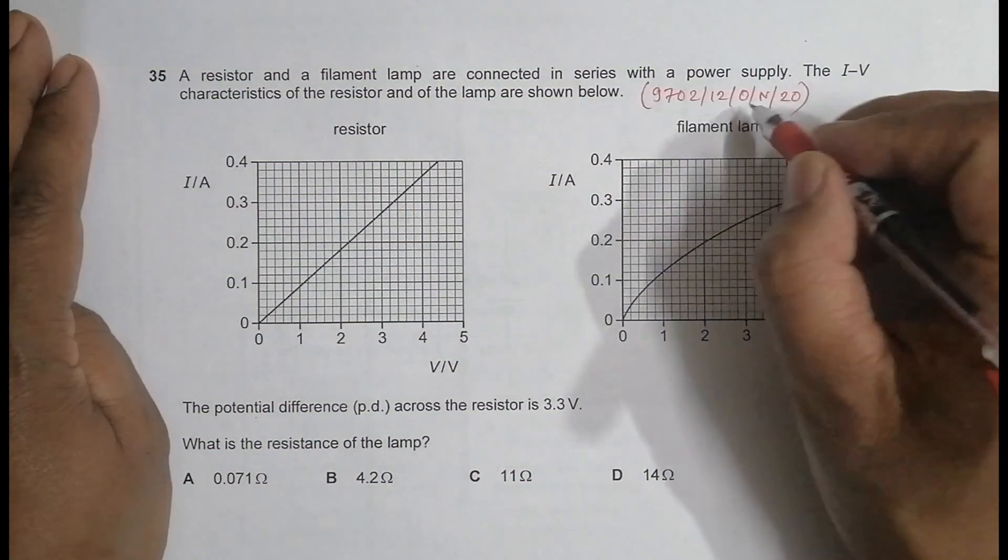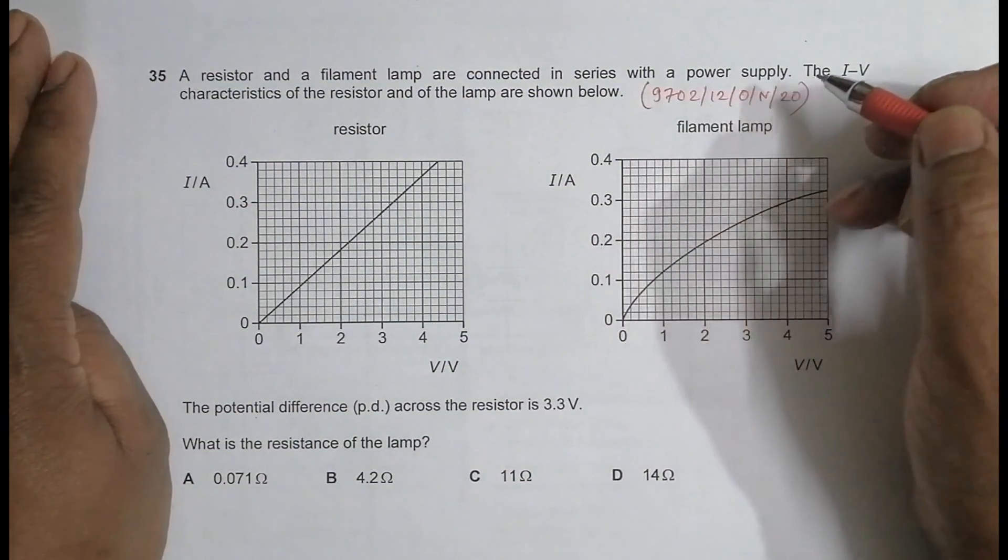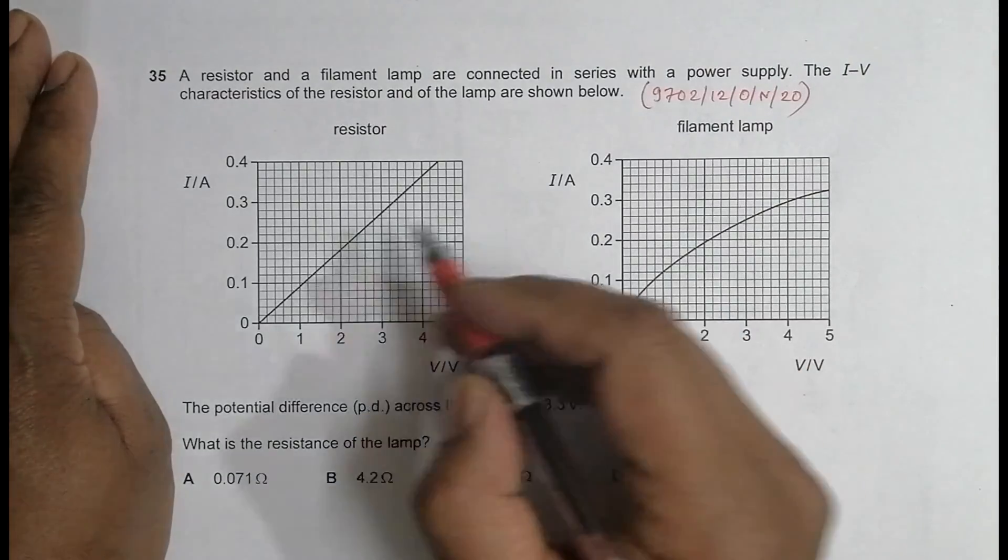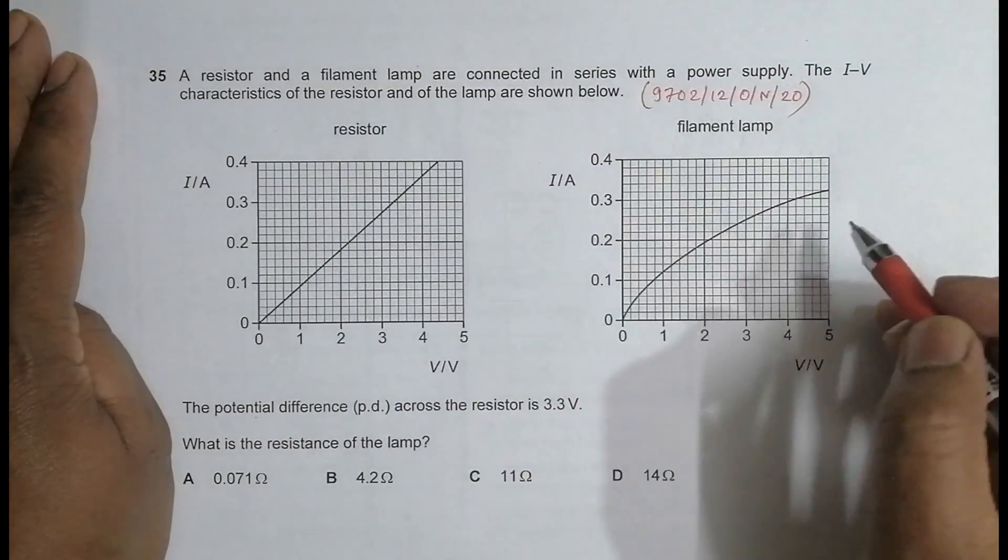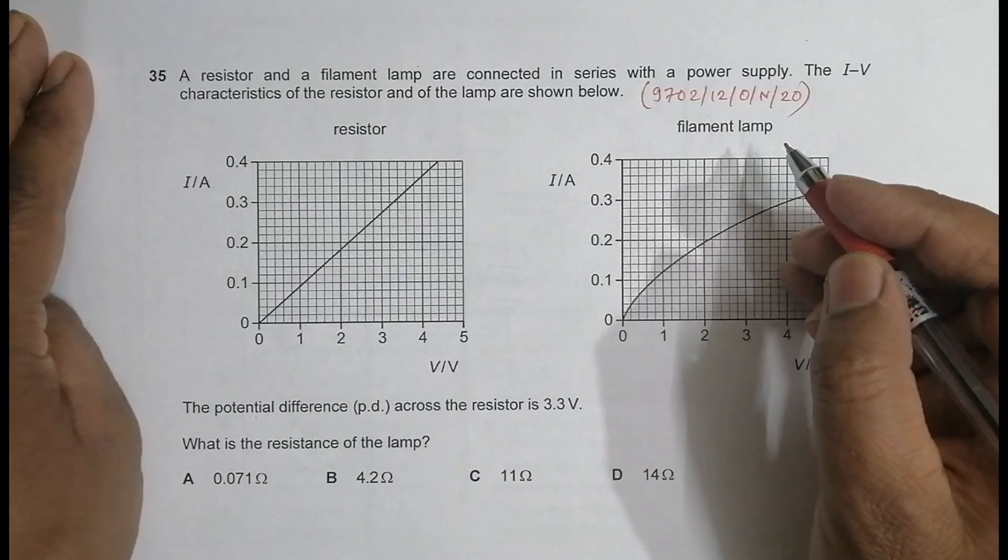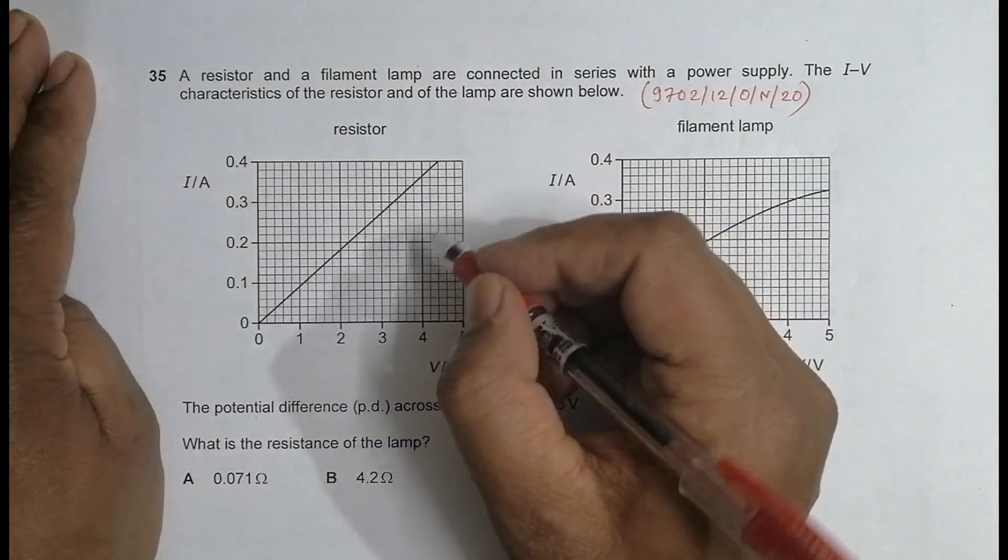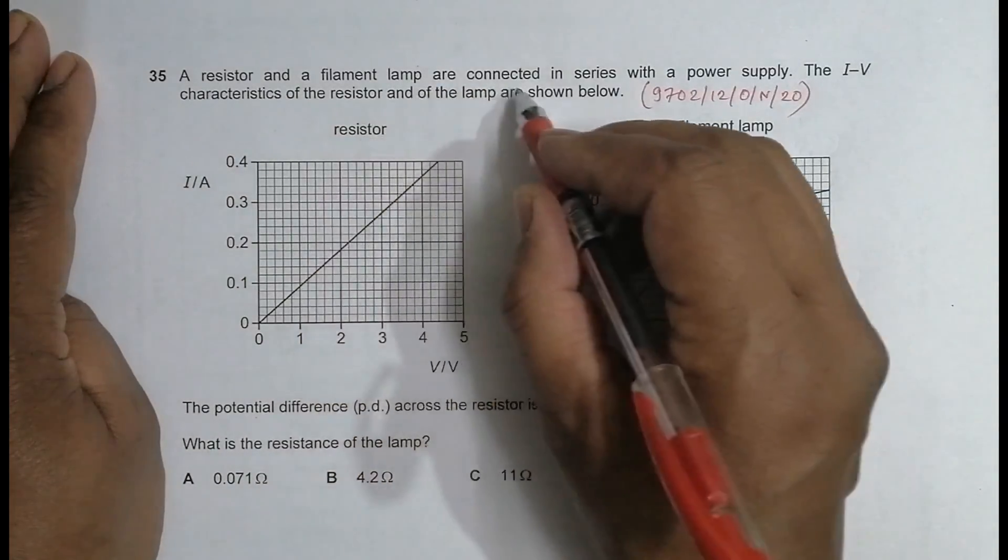Hello folks, this is a 2020 October November paper 1-2, question number 35. This question belongs to current electricity, as you can see from the diagram. It says a resistor and a filament lamp are connected in series with a power supply.